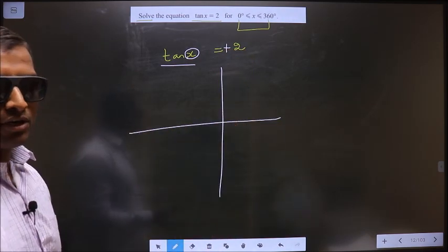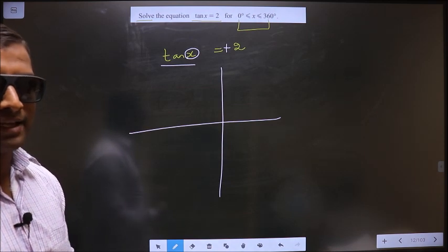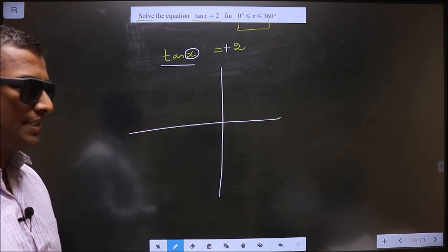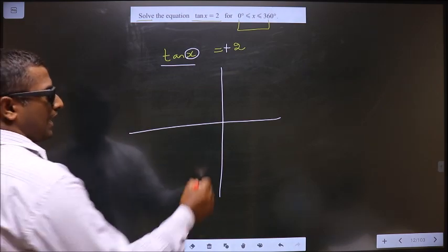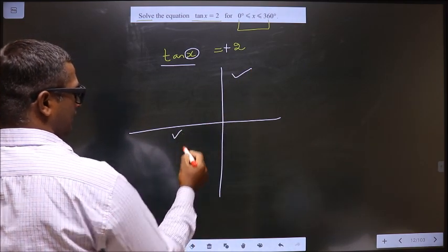So in what all quadrants is tan positive? It is like all silver tea cups. Tan is positive in the first and in the third.